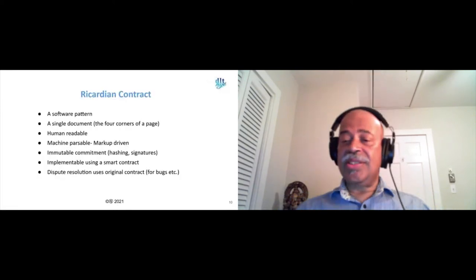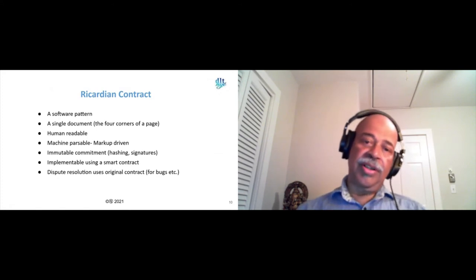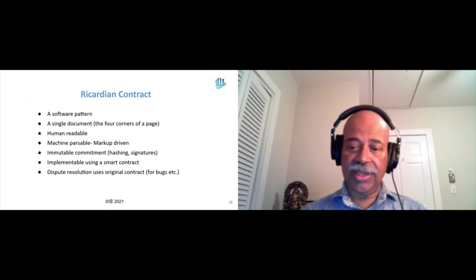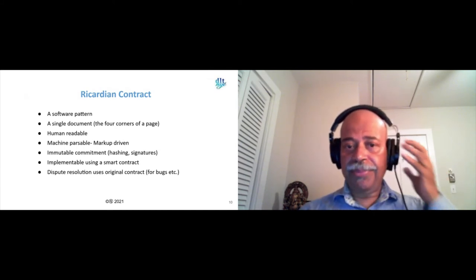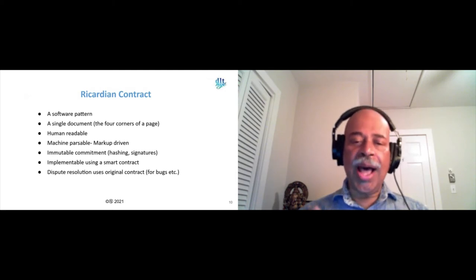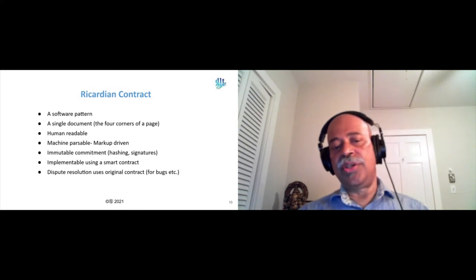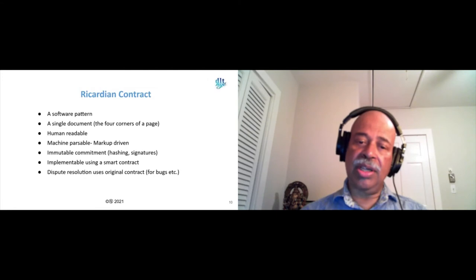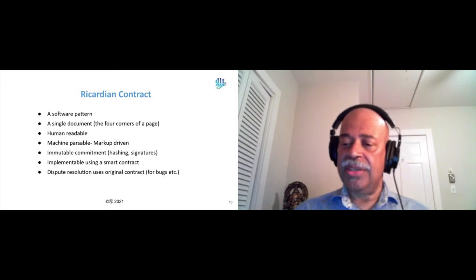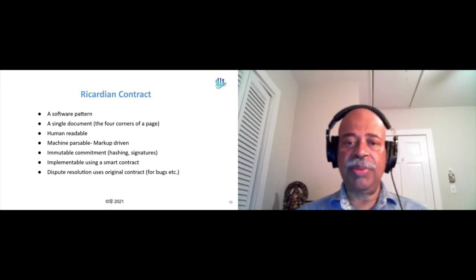In this context, we want to talk about something called a Ricardian contract, which many of you are familiar with in various forms. The Ricardian contract is a software pattern. It unites the human-readable contract to the machine-parsable contract. So why am I talking about contracts here? Because the transport of value from one system to another should be driven by some contract, some promise, some obligation — some way of saying 'I want to pay you. I want to take some money I have in this system and pay you in that system.'